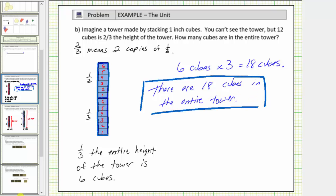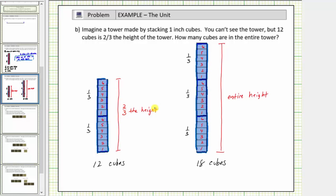Let's illustrate this. Again, we were given that twelve cubes represents two-thirds of the height. We cut this into two equal parts, which gave us one-third of the height is equal to six cubes.